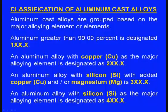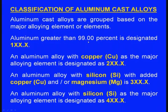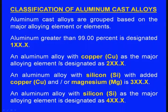Now let us see the classification of aluminum casting alloys. Aluminum cast alloys are grouped based on the major alloying element present. Aluminum greater than 99 percent is designated as the 1xx series — it is mostly pure aluminum. An aluminum alloy with copper as the major alloying element is designated as the 2xx series.